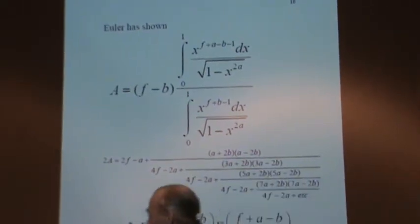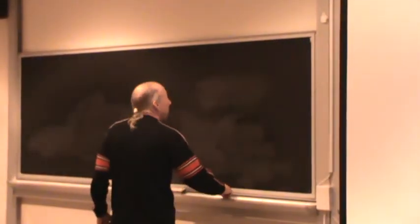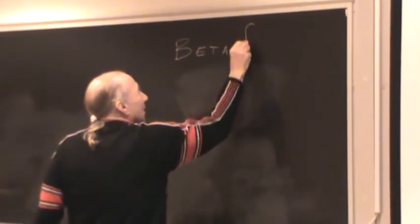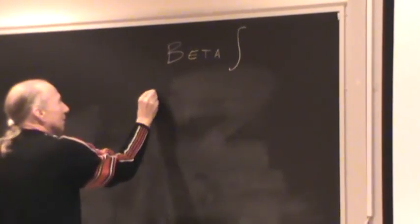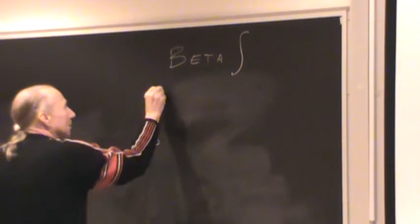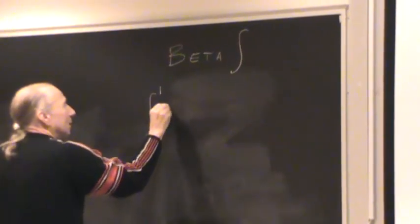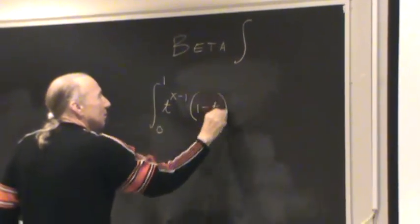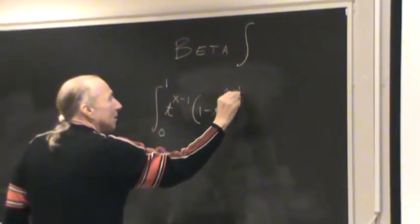Now, the beta integral, just in case you may have forgotten, the beta integral looks like the integral from 0 to 1, t to the x minus 1, 1 minus t to the y minus 1, dt.